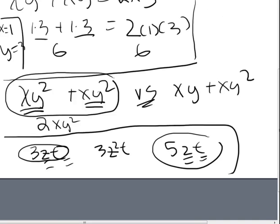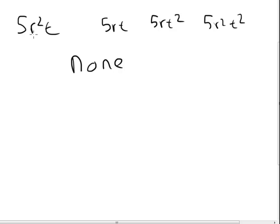Let's do one last example. Let's say we've got 5r squared t, 5rt, 5rt squared, 5r squared t squared. Which, if any, of these terms are like terms? It turns out none are. Because we have an r squared t here, but nowhere else do we have r raised to the second power and t raised to the first. And the same goes for each of these. There's r t here. Again, there's no set of variables that are being multiplied whose exponents are the same.